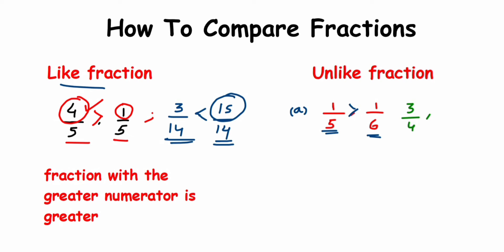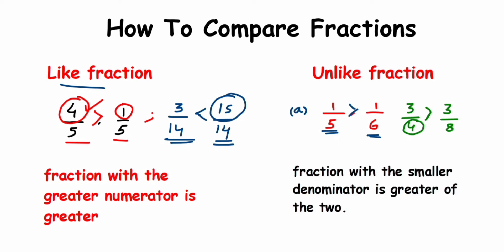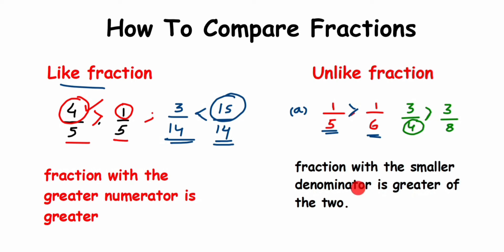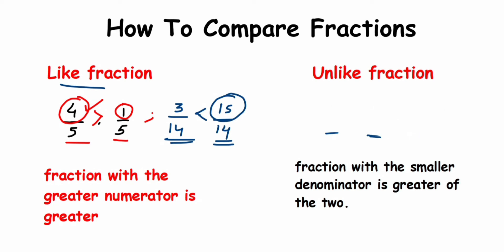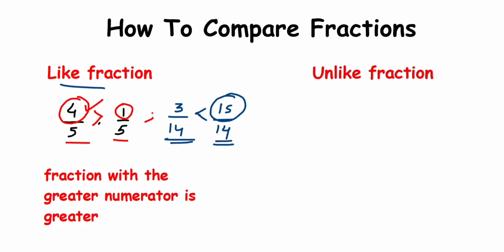Another example: 3/4 and 3/8. The denominators are 4 and 8, and 4 is smaller than 8, so 3/4 is greater than 3/8. To summarize: for unlike fractions where numerators are the same, the smaller the denominator, the greater the fraction.